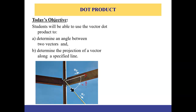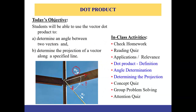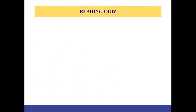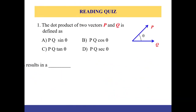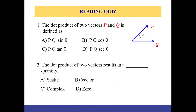The second application is to determine the projection of a vector along a specified line. For example, if we want to know what component of a force acting along a cable contributes in the direction of vector B, we project that vector along the specific line.